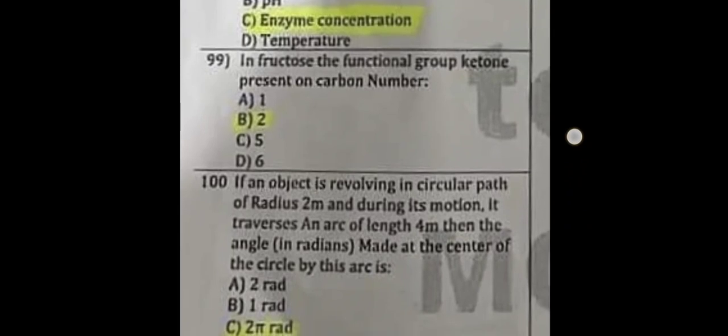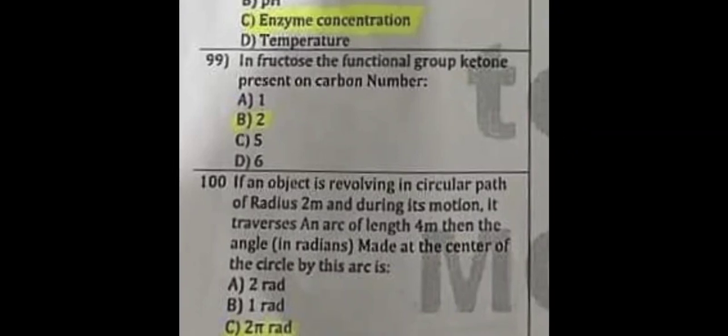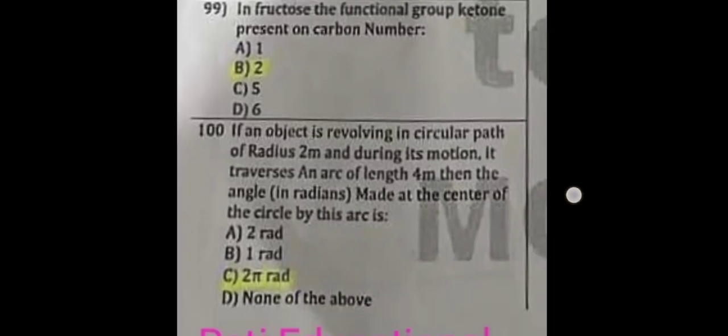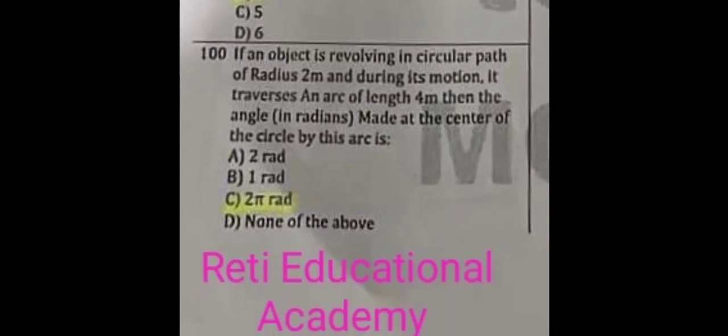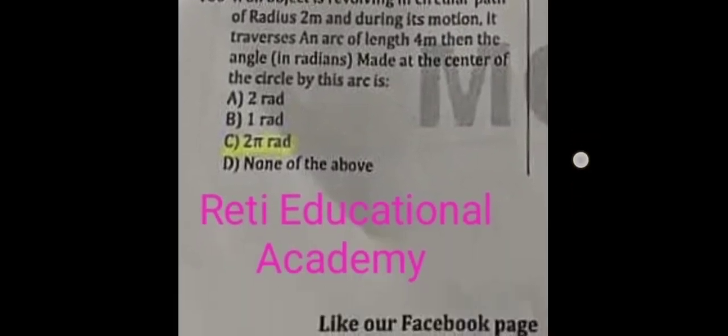Question number 99: In fructose, the functional group ketone is present on carbon number 2. Question number 100: If an object is revolving in a circular path of radius 2 meters and during its motion it draws an arc of length 4 meters, then the angle in radians made at its center is 2π radians.